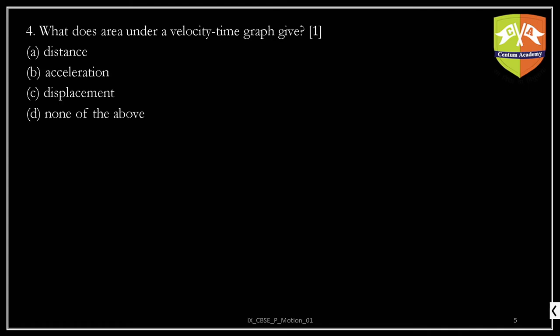Here is another question: what does the area under a velocity time graph give? Does it give distance, acceleration, displacement, or something else? Let's find out what it means. In the motion chapter, you would have come across at least two varieties of graphs — position time graph, displacement time graph, or velocity time graph.